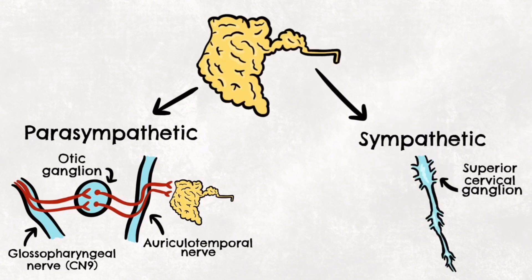Sympathetic innervation originates from the superior cervical ganglion, part of the paravertebral chain or the sympathetic chain. This is just a long chain of ganglia next to the vertebrae. Fibres from the ganglion travel along the external carotid artery to reach the parotid gland. Increased activity of the sympathetic nervous system inhibits saliva secretion via vasoconstriction. Remember, the sympathetic system opposes the action of the parasympathetic.